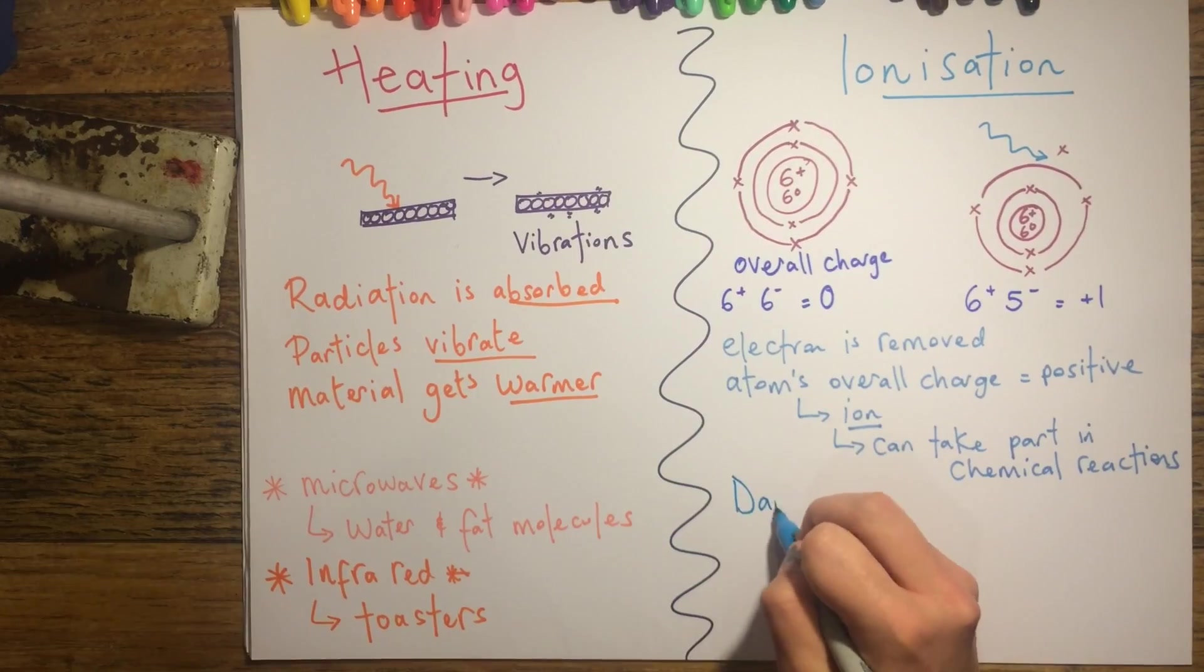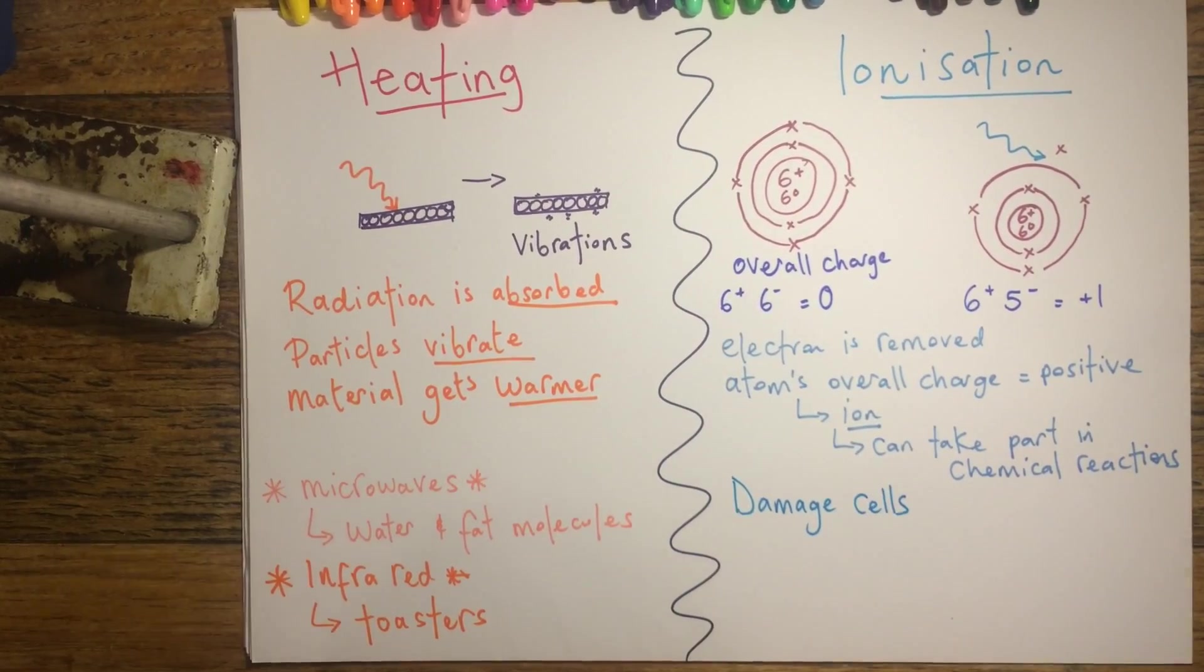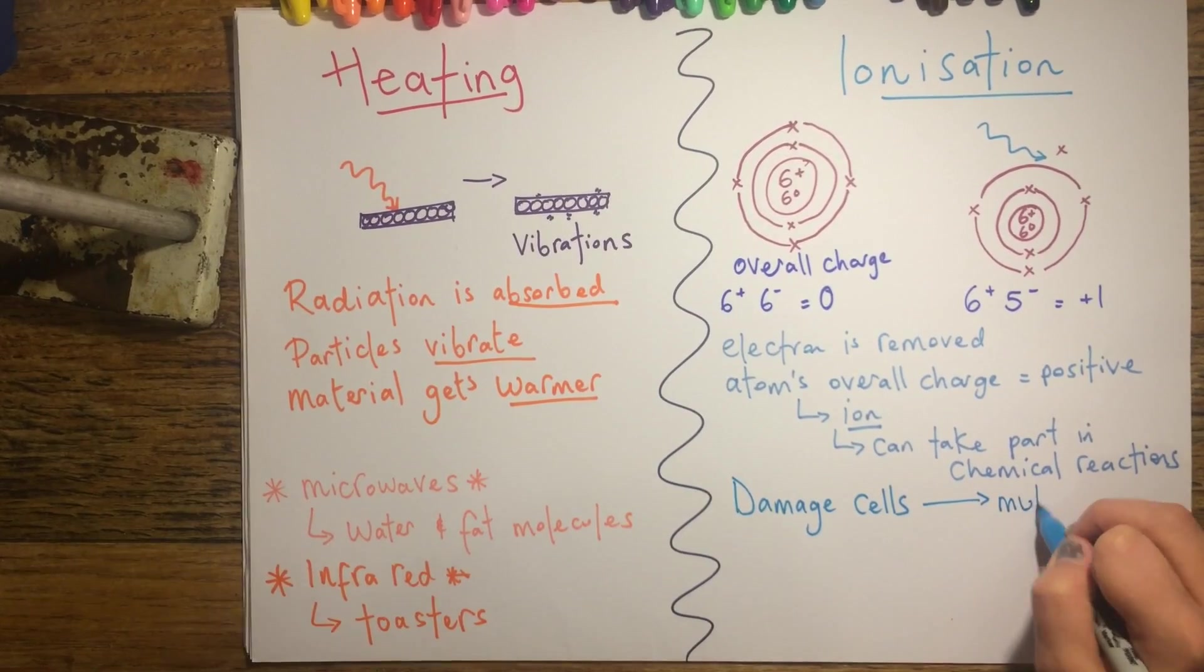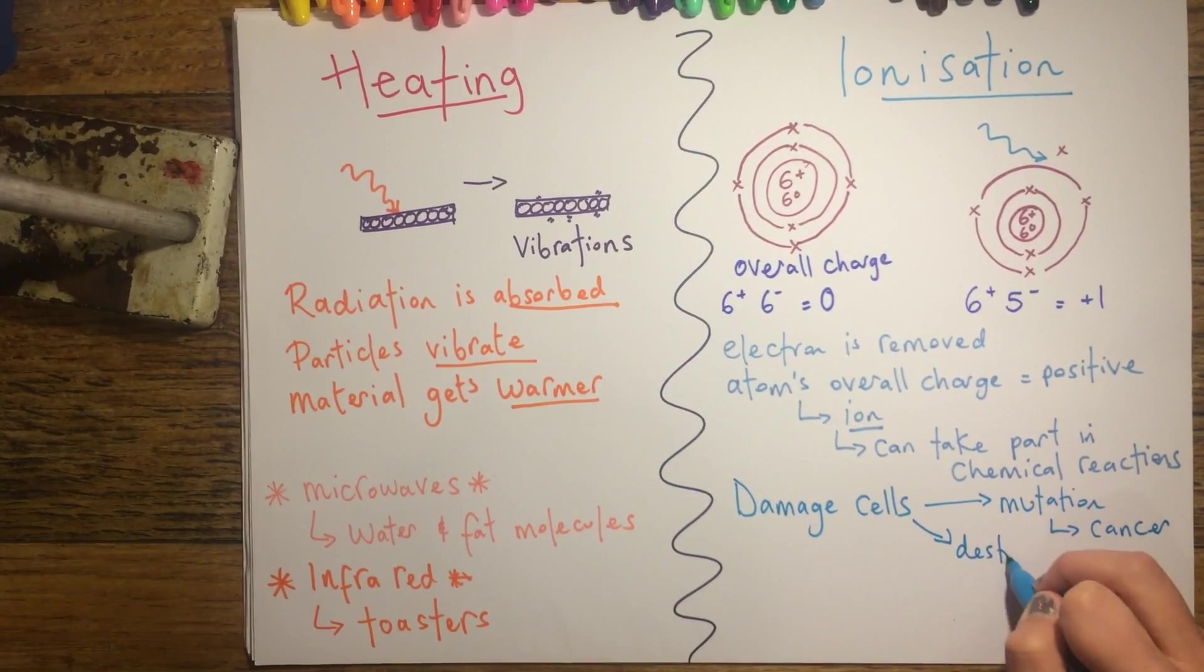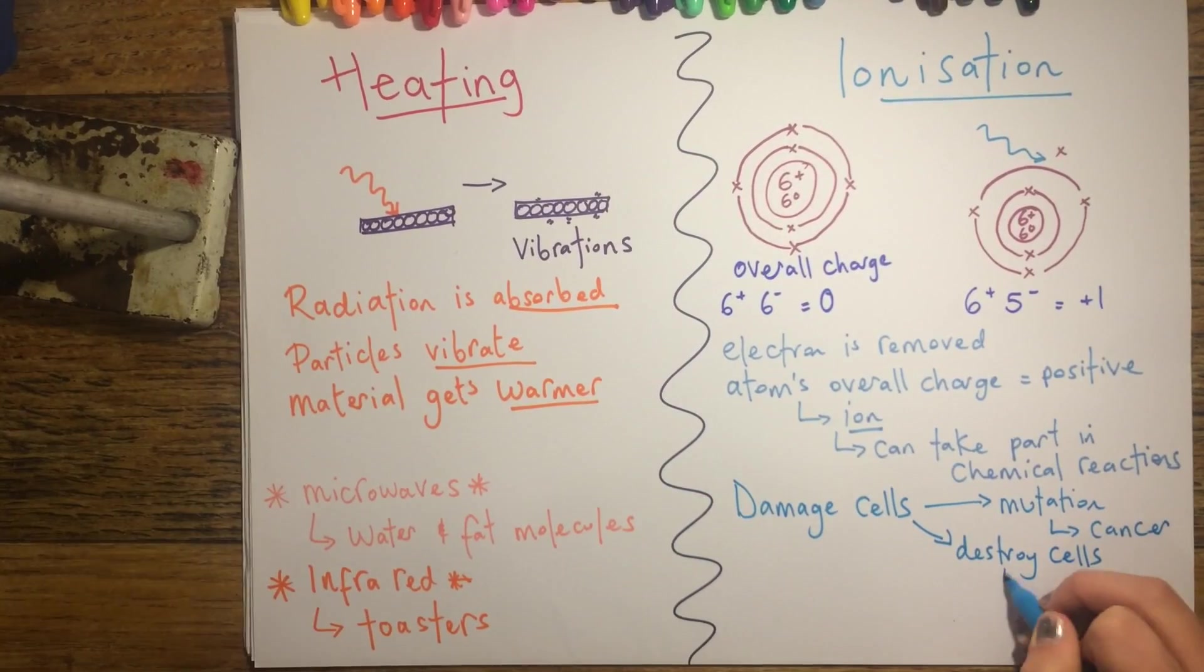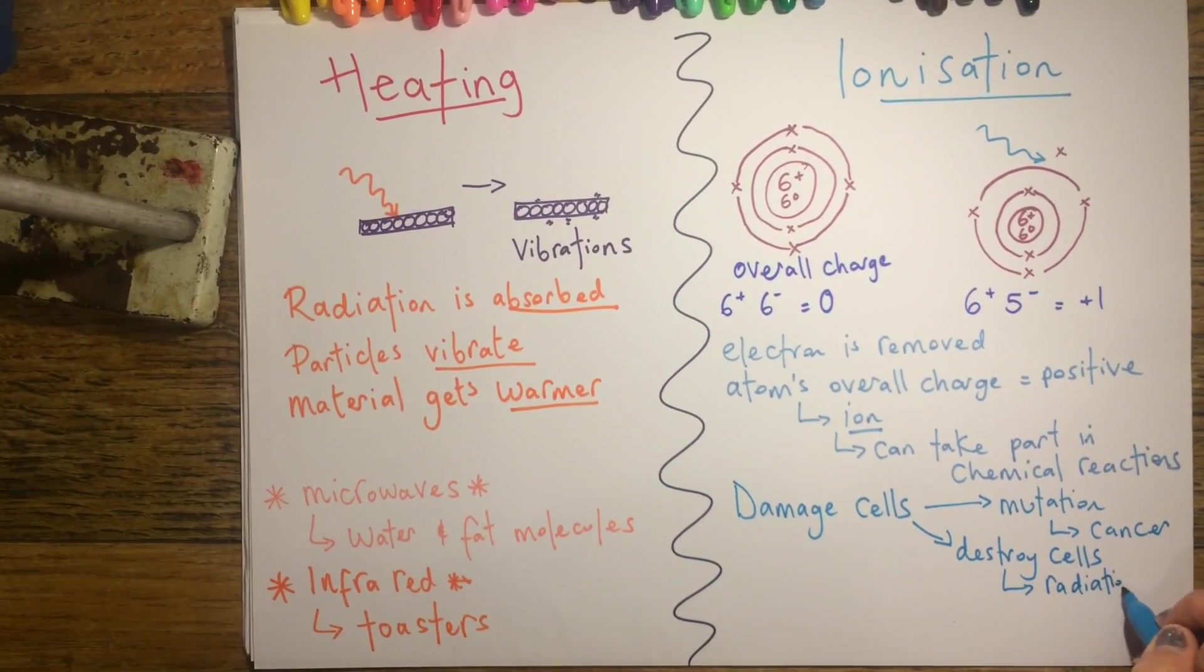An issue with ionisation is that it can damage living cells. Lower energy ionising radiations can cause mutations which can cause cancers, and higher energy can actually destroy the cells themselves which can lead to radiation sickness.